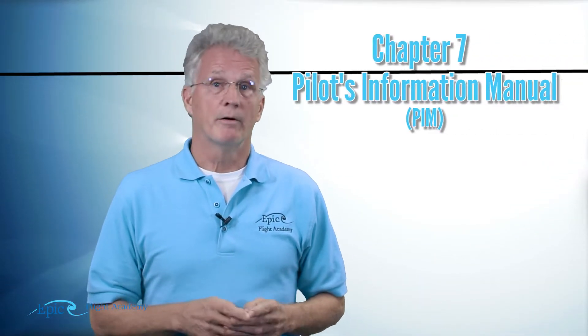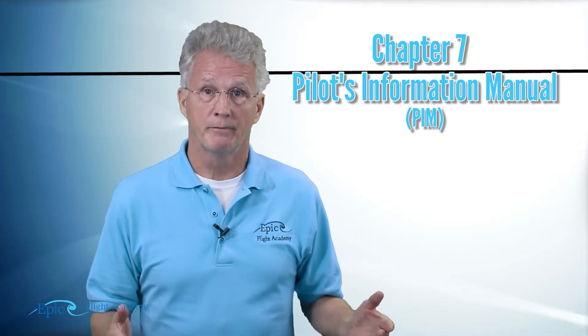Now folks, let's take a look at the electrical schematic for the 172. The electrical schematic is found in chapter 7 of your PIM, or your pilot information manual. The schematic that we're going to show on the screen is a more generalized schematic, so it's not going to look exactly the same as the one in chapter 7.